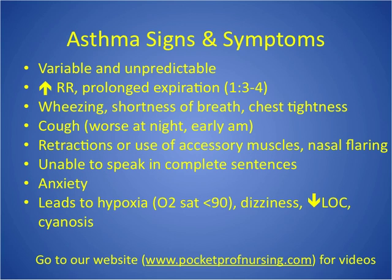The signs and symptoms of asthma can be variable and predictable, but we'll run through them quickly. An increased respiratory rate, prolonged expiration — this is sometimes asked on tests. A normal inspiratory-expiratory ratio is 1 to 2, but in asthma that's oftentimes 1 to 3 or 1 to 4, where the expiration is much longer than it should be. Wheezing, shortness of breath, chest tightness — everybody knows.